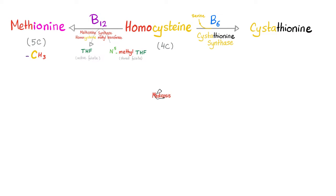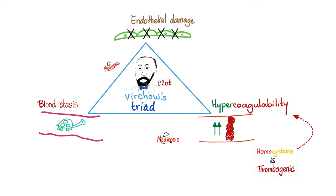Why do we have homocystinemia? It may be due to a defect in the enzyme methionine synthase, also known as homocysteine methyltransferase, or a problem with coenzymes B12 or folate. Alternatively, it could be a deficiency in cystathionine beta-synthase or vitamin B6 deficiency. Homocysteine causes hypercoagulability — part of Virchow's triad — leading to thromboses throughout the body.